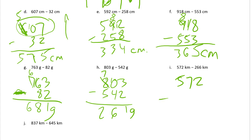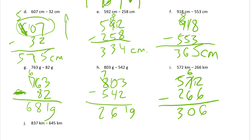Five hundred seventy-two minus two hundred sixty-six. Two minus six — we don't have enough ones, so we have to unbundle a ten. That leaves us with only six tens. Ten more ones plus the two we already have is twelve. Twelve minus six is six. Six minus six — that's all of the tens, so nothing is left in tens. Five hundreds minus two hundreds is three hundreds. These are kilometers.